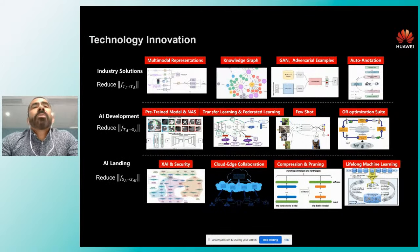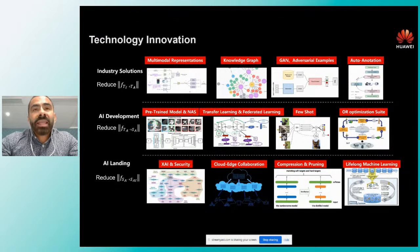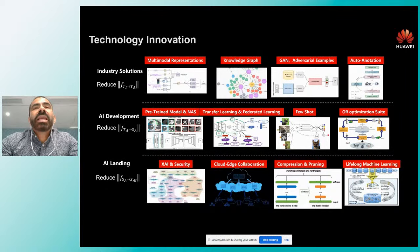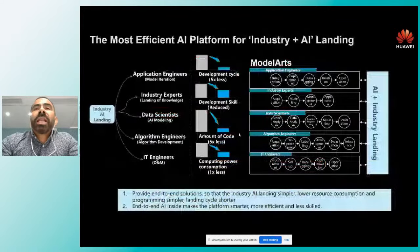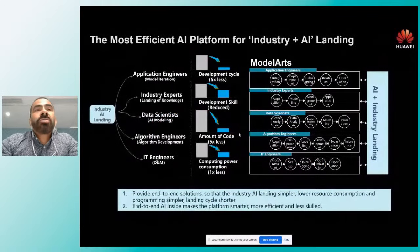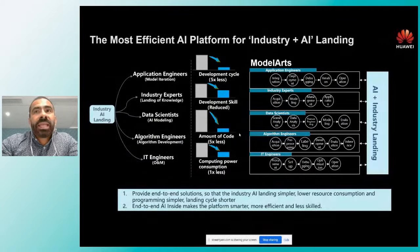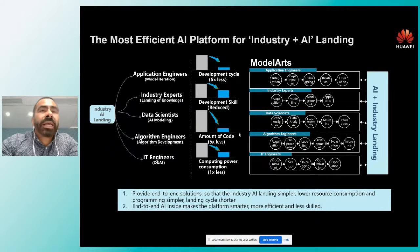Huawei es la compañía número dos en investigación y desarrollo, y toda esta investigación está reflejada en los productos; ModelArts no es la excepción. Tenemos técnicas y mejores prácticas incluidas dentro de la plataforma como redes neuronales, representaciones multimodales, Knowledge Graphs, entre otras. ModelArts nos ayuda a acelerar la inclusión de los distintos roles que participan en la inteligencia artificial. Los ingenieros de aplicaciones despliegan estos modelos dentro de una aplicación móvil, una aplicación web, en un chip, en un robot, etc.